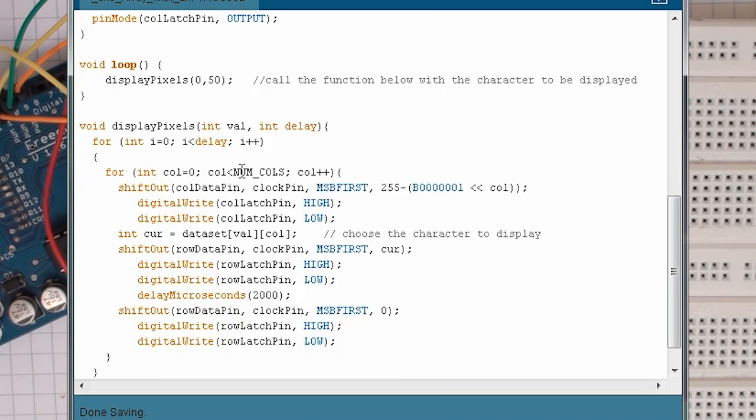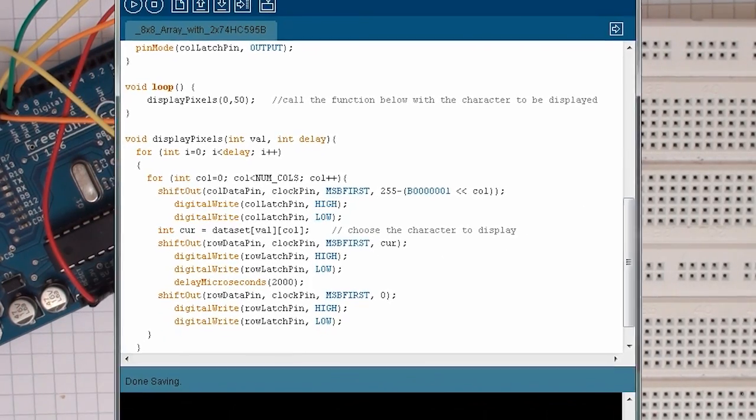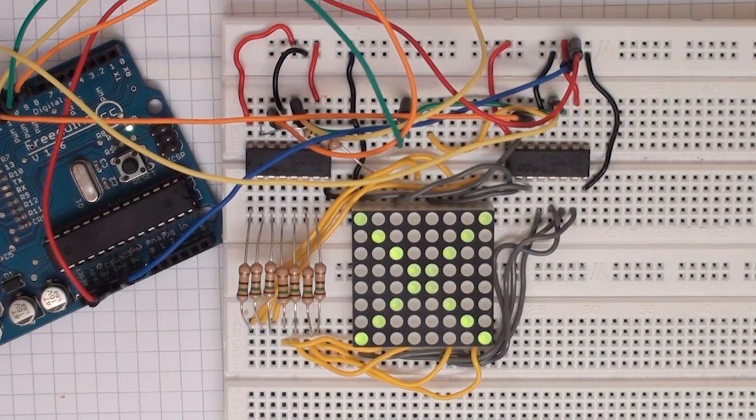The display function simply loops around each one of the columns and turns on the LED, turns off the LED for that particular point and uses persistence of vision to make it look like we are able to display multiple values on the screen at the same time. The flicker is a result of that, but you can't really see that with the naked eye, it has just been picked up by the camera.